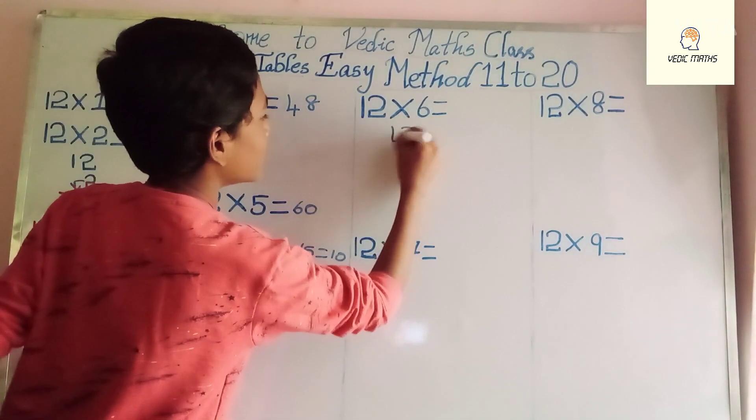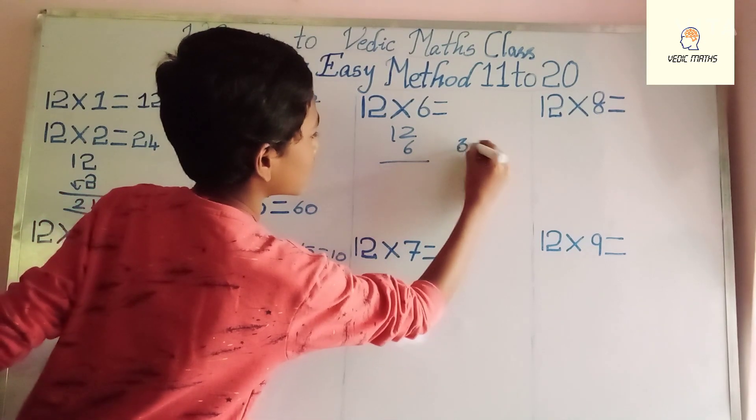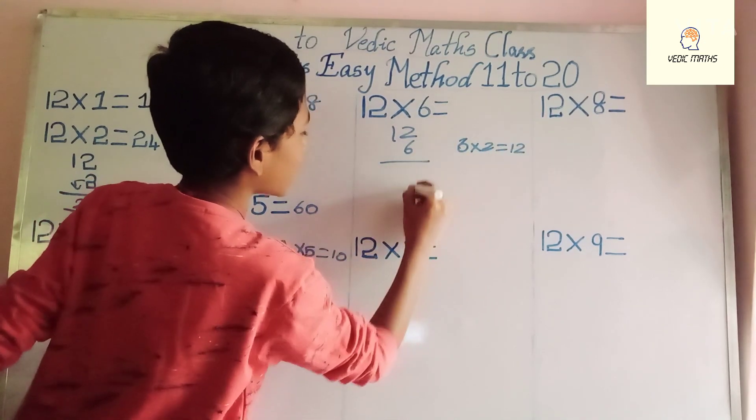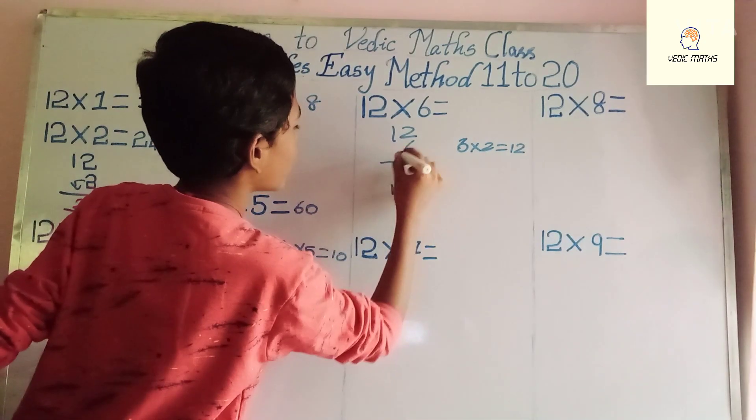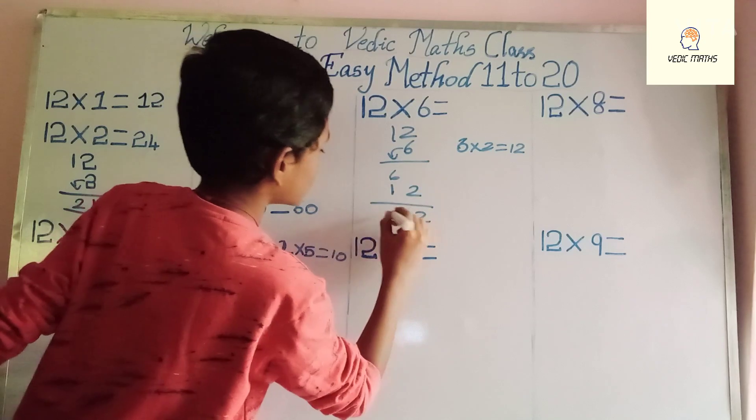And 12 into 6: 6 2's are 12, write 2 here and 1 here, and write the multiplier 6 here, that's 72.